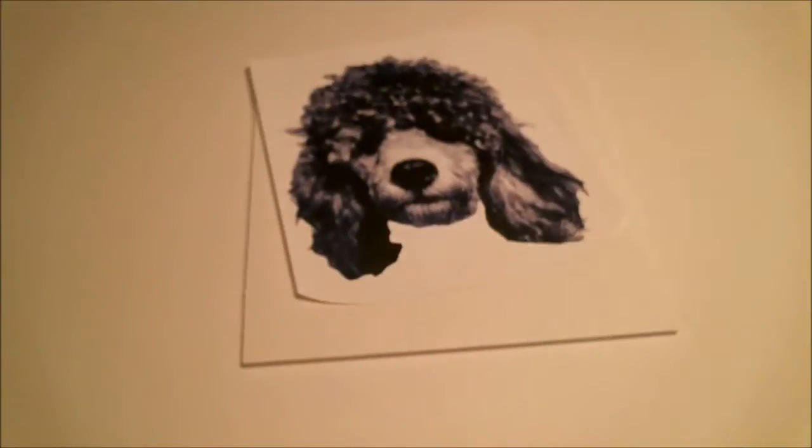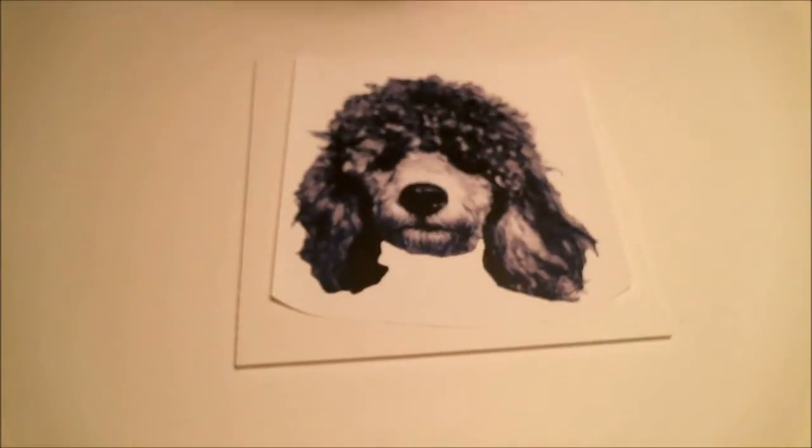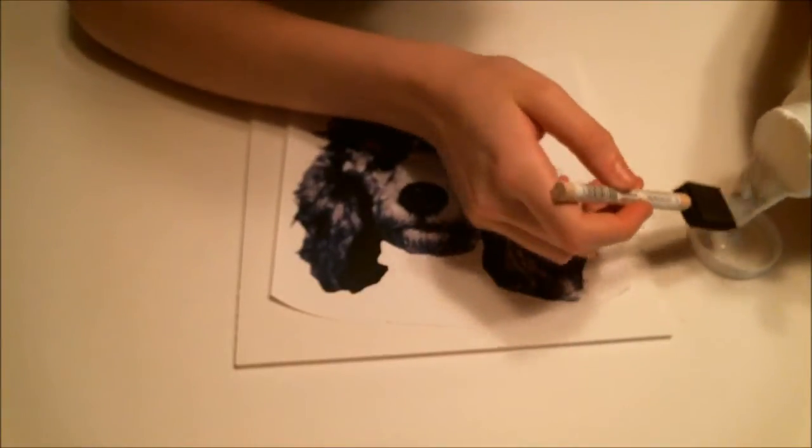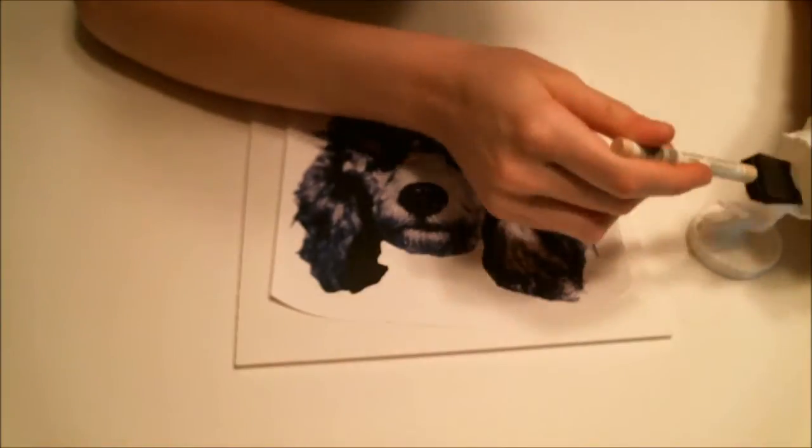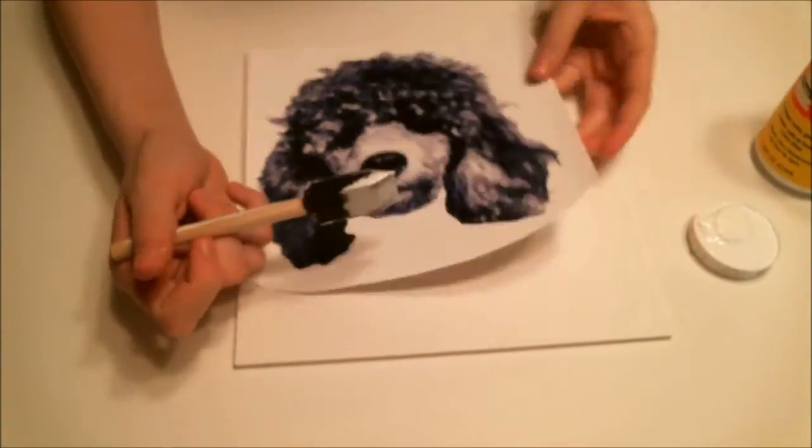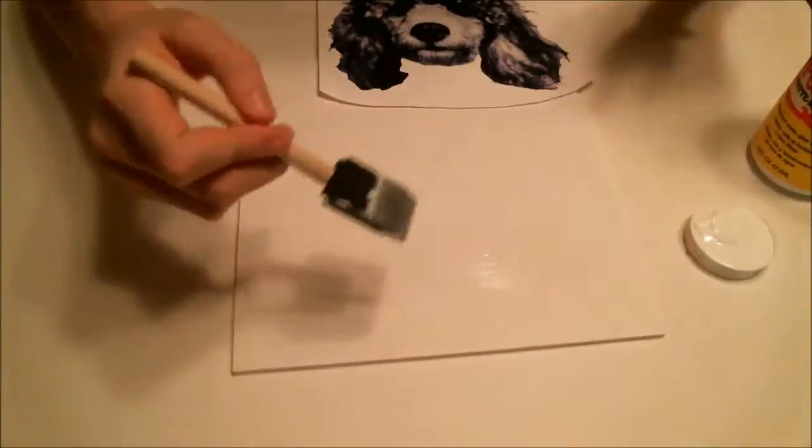Next, take some Mod Podge and a foam brush. Foam brushes are very helpful in this situation as they help the glue apply more evenly so I recommend you use one. And just apply some glue to the poster board, not to the photo, in a thin layer.